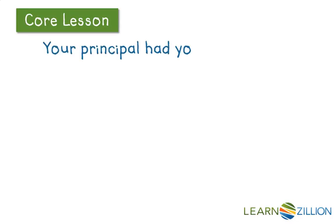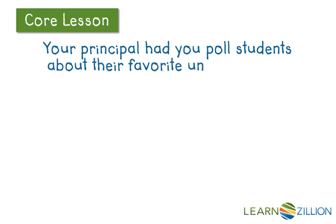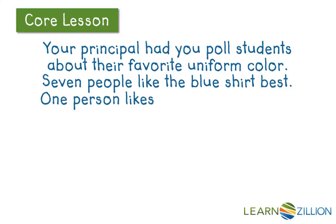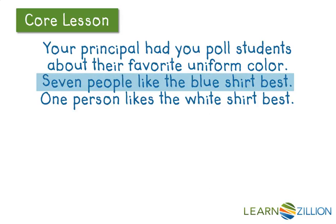Given this scenario: your principal had you poll students about their favorite uniform color. Seven people like the blue shirt best. Only one person likes the white shirt best. What parts and what total, if any, do you see in this scenario? Going through and annotating, I see that seven people like the blue shirt best — that's going to be one of my parts — which means my other part is that one lonely person who likes the white shirt best.